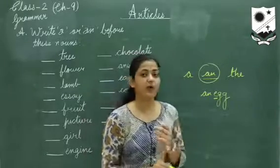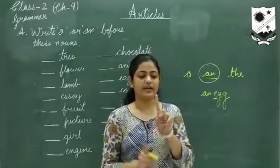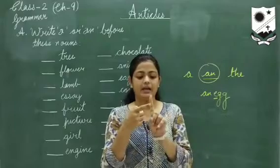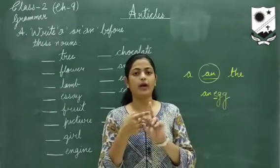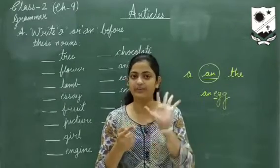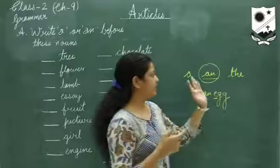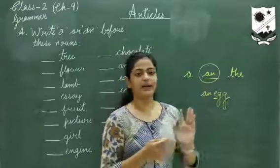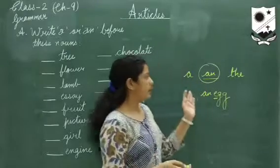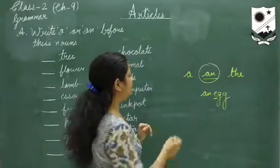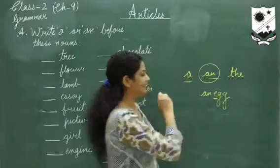And what are the vowels? The vowels are a, e, i, o, and u. They are 5 in number. So with them we have to use the article 'an'.